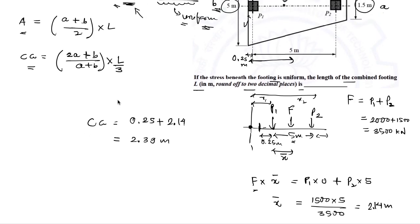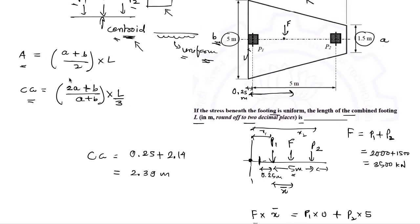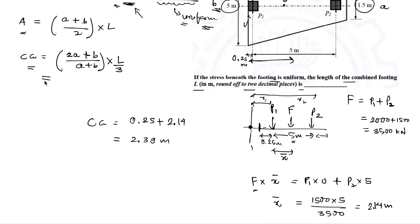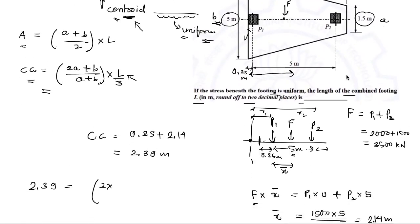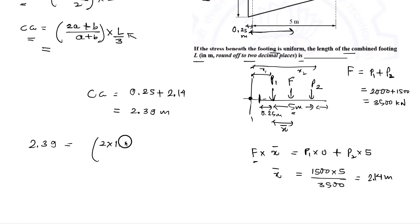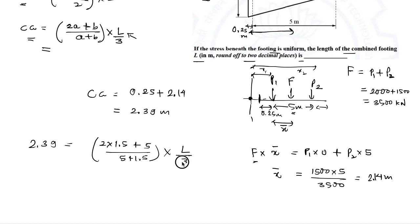Now the centroid of the footing, measured from the larger side (5 m side), is 0.25 + 2.14 = 2.39 meters. Using the centroid formula: 2.39 = (2A + B) / (A + B) × L/3, where A = 1.5 m and B = 5 m. Substituting: 2.39 = (2×1.5 + 5) / (1.5 + 5) × L/3.